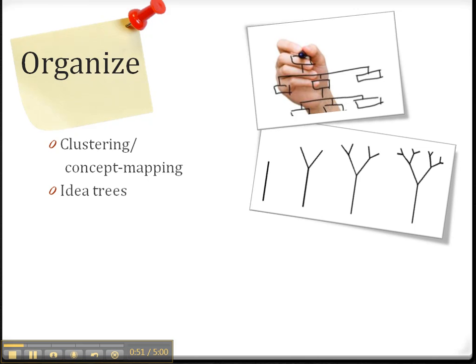To make a concept map, draw a bubble around your thesis or main idea and then smaller bubbles representing the main points of your argument and so on. An idea tree is similar. Write down your main idea on the trunk of the tree and then branch out your ideas from there.